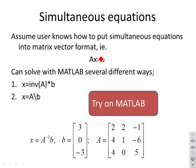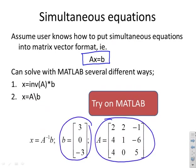Next topic, simultaneous equations. We assume that the user now knows how to put simultaneous equations into matrix vector format that was covered in the previous video. So we can write simultaneous equations as some matrix A times a vector of unknowns X equals a vector of knowns B. Here I've given you some possible values. There's B and there's A. Now if you want to solve these on MATLAB there are two obvious commands you can use.